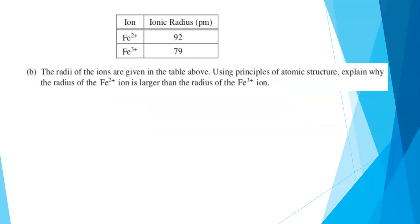Part B: the radii of the ions are given in the table above. There it is. Using principles of atomic structure, explain why the radius of the iron 2 ion is larger than the radius of the iron 3 ion. So they really want you to talk about atomic structure, so we're looking at protons, electrons, electron configurations, those kinds of details here. This question was also scored out of one point. We know that both ions have the same nuclear charge. They both have 26 protons. So whether you needed to state that explicitly, not so clear, but it certainly won't hurt.